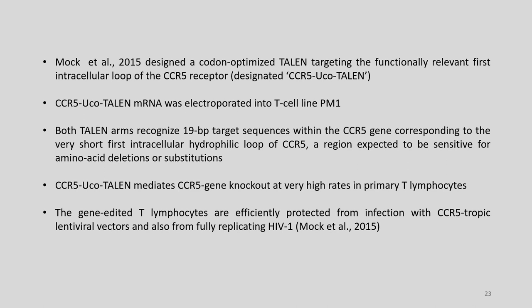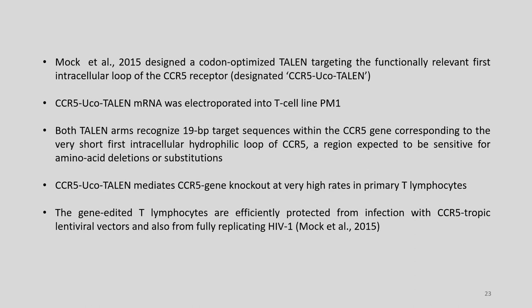Mock et al. in 2015 designed a codon-optimized TALEN targeting the functionally relevant first intracellular loop of the CCR5 receptor, designated CCR5-UCO TALEN. CCR5-UCO TALEN mRNA was sent into the T cell line PM1 through electroporation. Both TALEN arms recognized 19 base pair target sequences within the CCR5 gene corresponding to the first intracellular hydrophilic loop of CCR5. CCR5-UCO TALEN mediated CCR5 gene knockout at very high rates in primary T lymphocytes, and the gene-edited T lymphocytes were efficiently protected from infection with CCR5-tropic lentiviral vectors and fully replicating HIV-1.